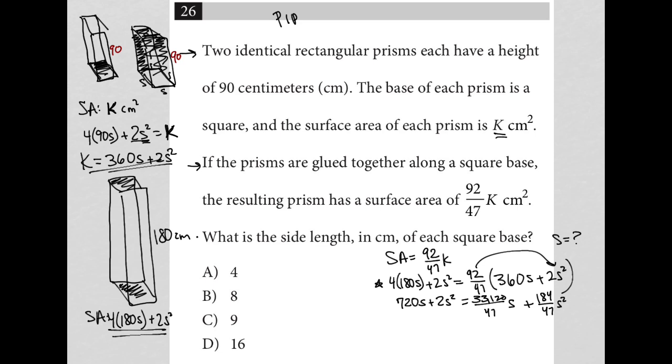So of course, I have some like terms here. So I am going to combine my like terms. So I'm going to subtract this from both sides. And let's see what that gets me. So I probably should have used the decimal form of it. But that's fine. So 33,120 divided by 47. And that's a negative. And I'm adding that to 720. So what I'm getting here is 15.32s.